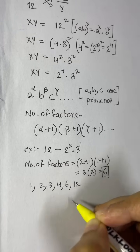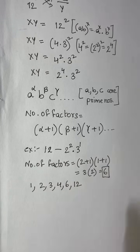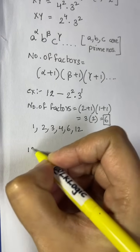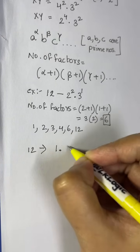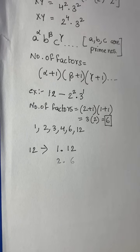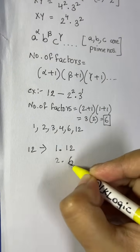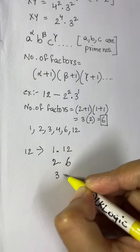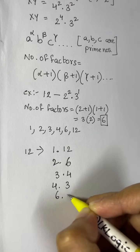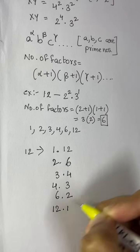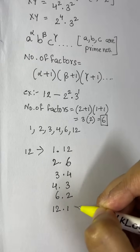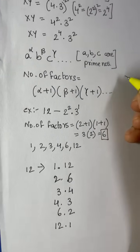So 12 can be written as a product of integers in 6 different ways: 1×12, 2×6, 3×4, 4×3, 6×2, and 12×1. That's all 6 ways. Now let's apply this to our problem.